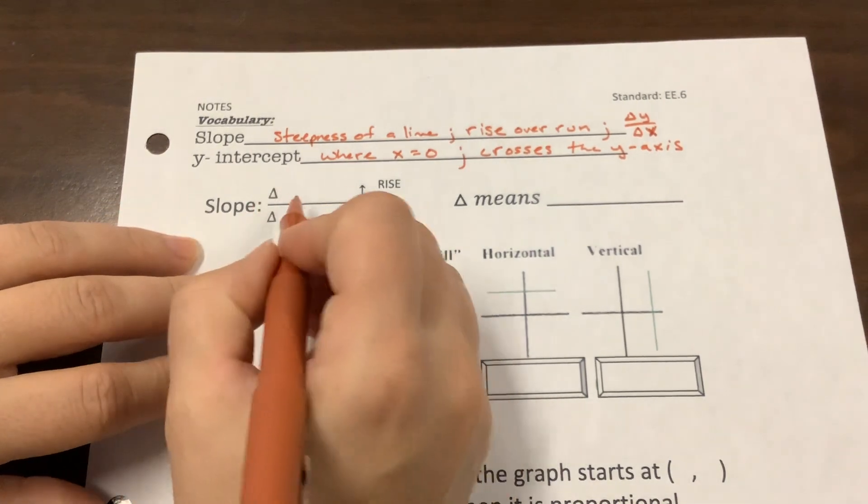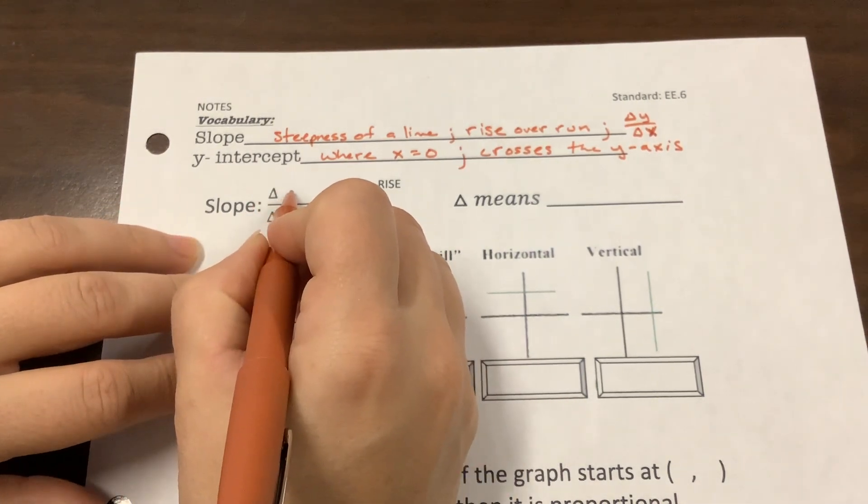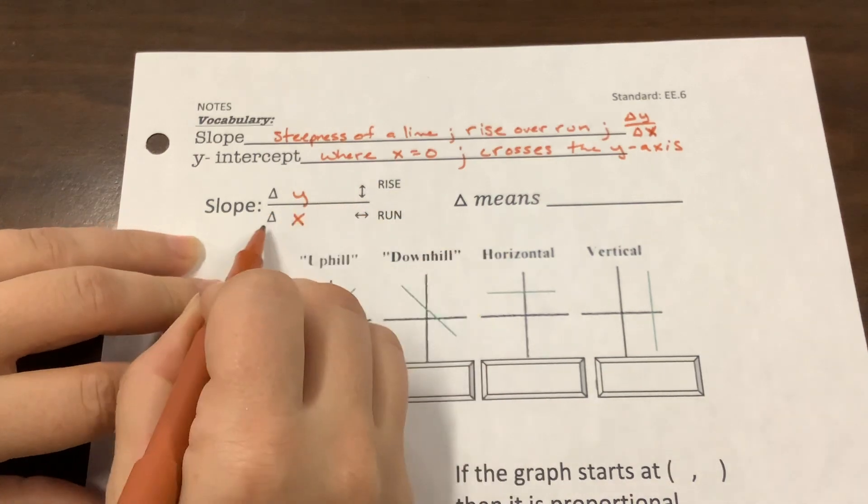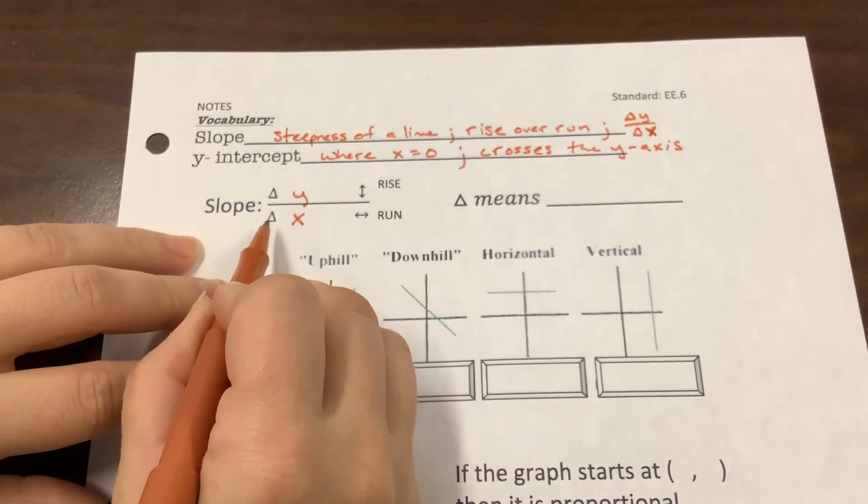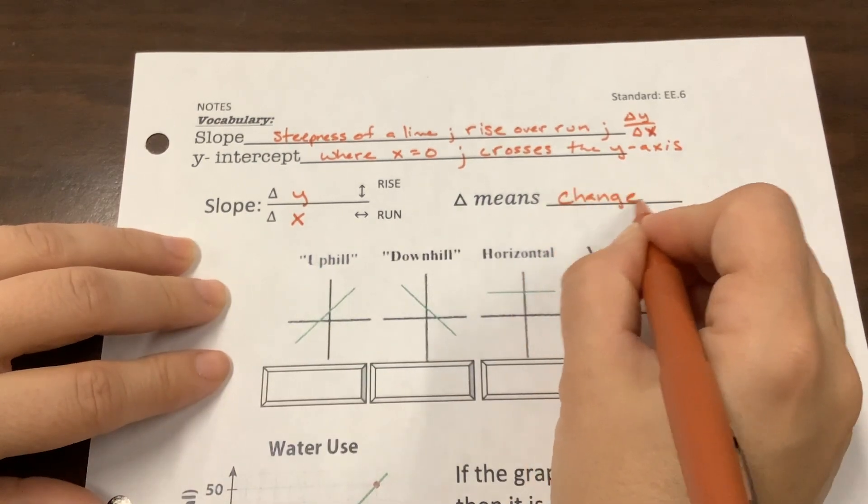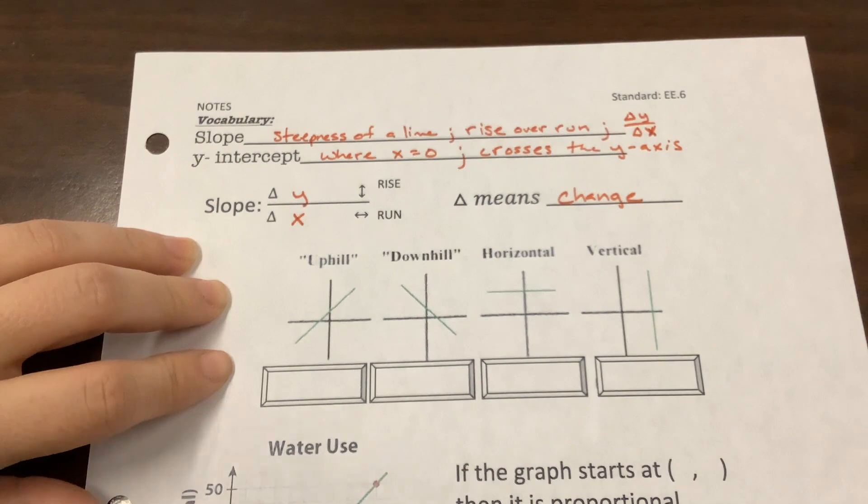So slope is the change in y over the change in x. That's what this little symbol is being used for, the word change. In other words, the difference, right?